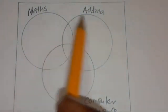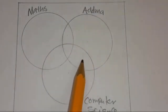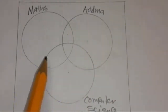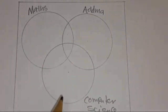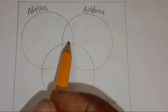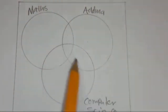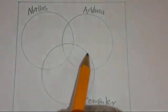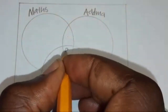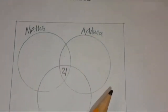When you look at set Maths and ADMA, this is the intersection of two sets. This part is the intersection of ADMA and Computer Science, and this one is the intersection of Maths and Computer Science. The middle region indicates those teachers that taught all three subjects, because it is part of ADMA, part of Maths, and part of Computer Science. So you write 21 here — 21 teachers taught all the subjects.